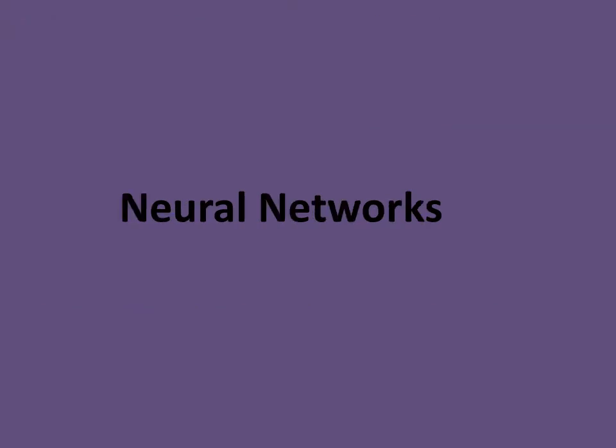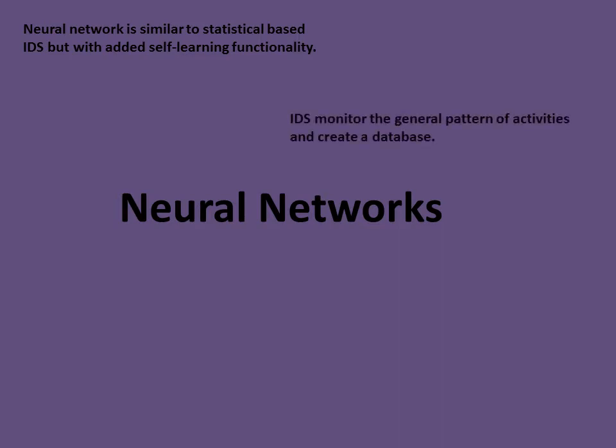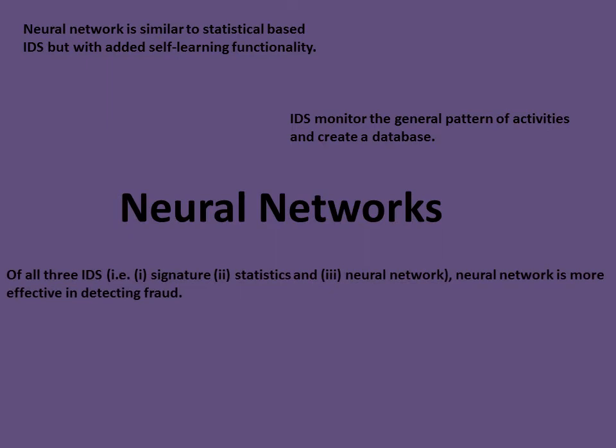Neural Networks are similar to statistical IDS but with added self-learning functionality. They monitor general patterns of activities and create their own database. Out of all three IDS types — signature, statistical, and neural network — neural network is more effective in detecting fraud.